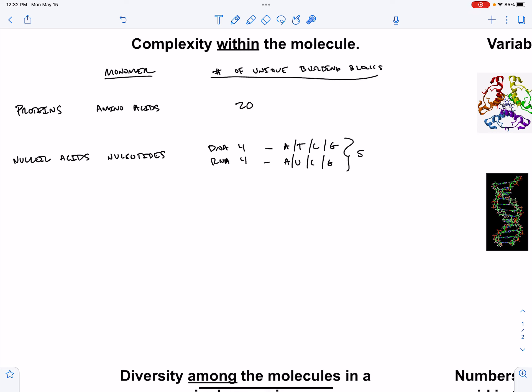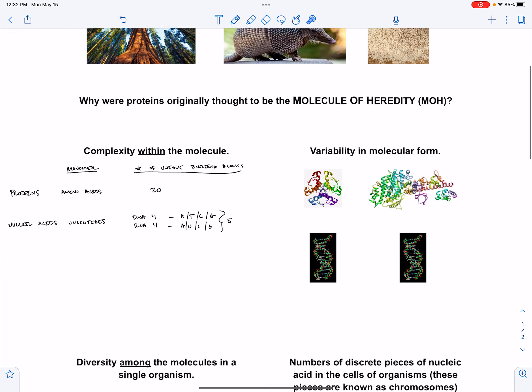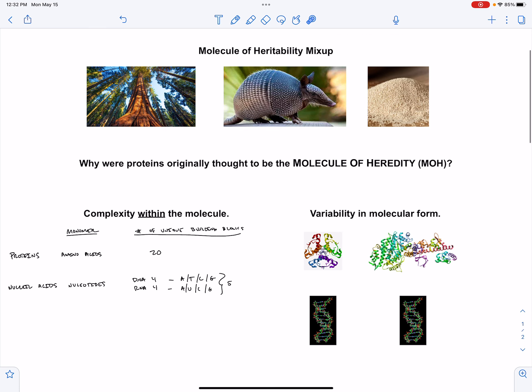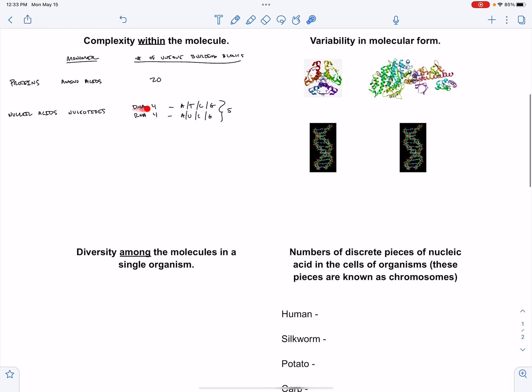It seemed much more reasonable to scientists living a hundred years ago that the 20 different types of amino acid building blocks were responsible for this great diversity that we see in living things. So proteins are much more complex in terms of their building blocks, so people thought that must be it. We can't explain this vast amount of diversity with something so simple as DNA.